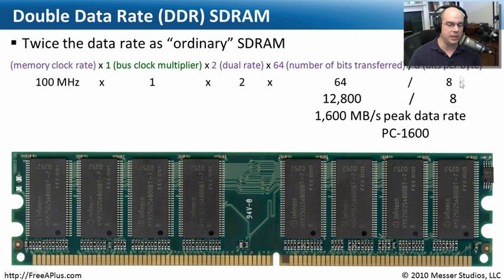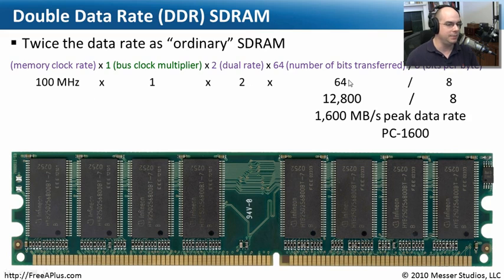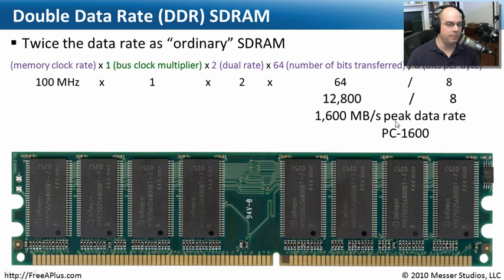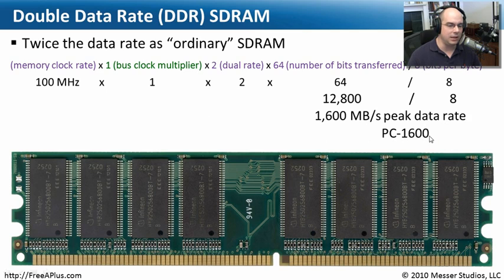In a single byte there are eight bits, so we divide the result by eight. Starting with a 100 MHz memory clock rate: 100 × 1 × 2 × 64 = 12,800. Dividing by 8 gives us 1,600 megabytes per second as the peak data rate. So DDR rated for a 100 MHz memory clock rate is described as PC1600.